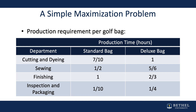For cutting and dyeing, the production time for a standard bag is seven-tenths of an hour; for a deluxe bag, it's one hour. For sewing, the standard bag takes half an hour, while a deluxe bag takes five-sixths of an hour. To finish the bag, it takes one hour for a standard bag but two-thirds of an hour for a deluxe bag. Inspection and packaging takes one-tenth of an hour for a standard bag and one-fourth of an hour for a deluxe bag. The parameters differ, but both bags require the same type of process.